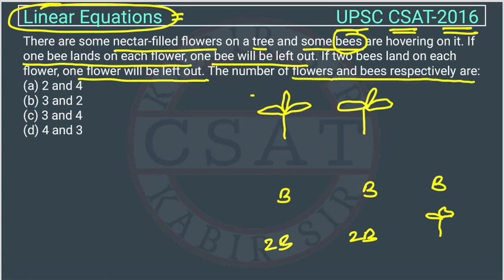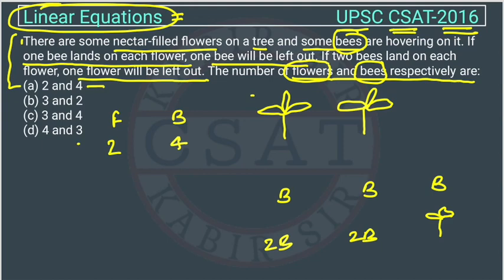This is a good but very confusing question if you do not understand it. Through the options, you can solve it very easily. They are asking the number of flowers and the number of bees, so suppose the number of flowers and bees — I am assuming option A first, where flowers are 2 and bees are 4.